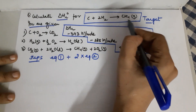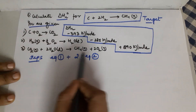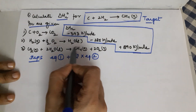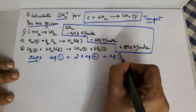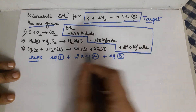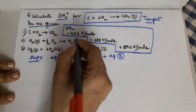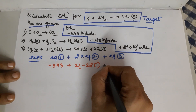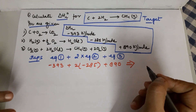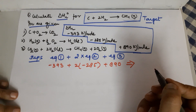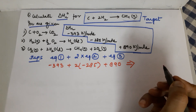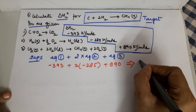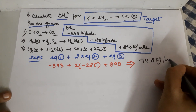Moving on, I require methane. Methane is available only in equation three, and it is on the product side — which is exactly where I want it. So I add equation number three as it is. The answer for the heats comes out as: minus 393 plus 2 times minus 285 plus 890. Adding these three values gives the result of minus 74.8 kilojoules per mole.